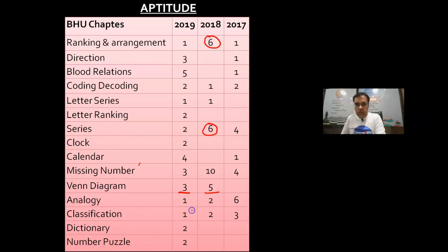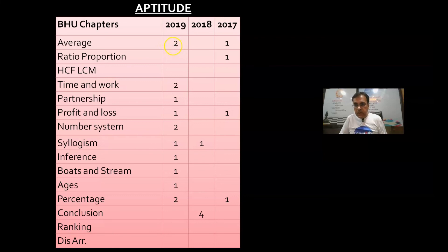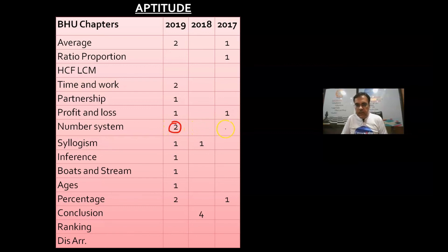Reasoning and Arithmetic: there are a few arithmetic chapters. Based on last year's pattern you have to cover them. Average: 2 questions, 1 question. Ratio and Proportion: about 1 question, no question in some years. Time and Work: 2 questions. Partnership: 2019 had 1 question, 2018 and 2017 had none. Profit and Loss: 1 question in 2019, 2017. Number System: major chapter but had 2 questions in 2019 and 2018, no question in 2017.